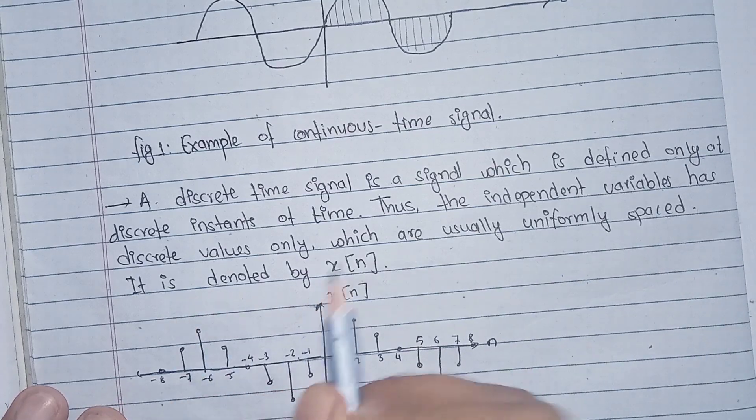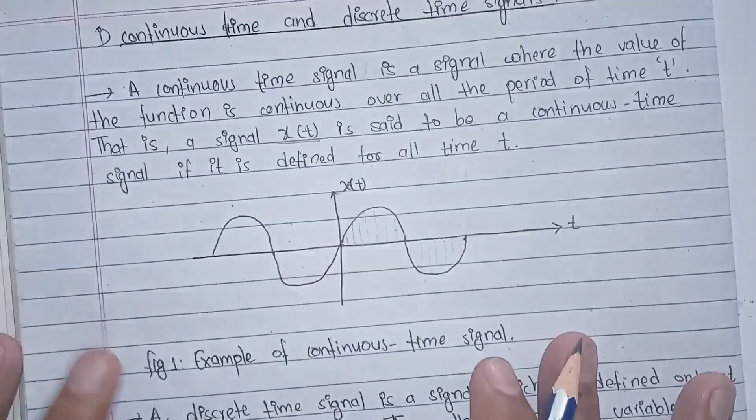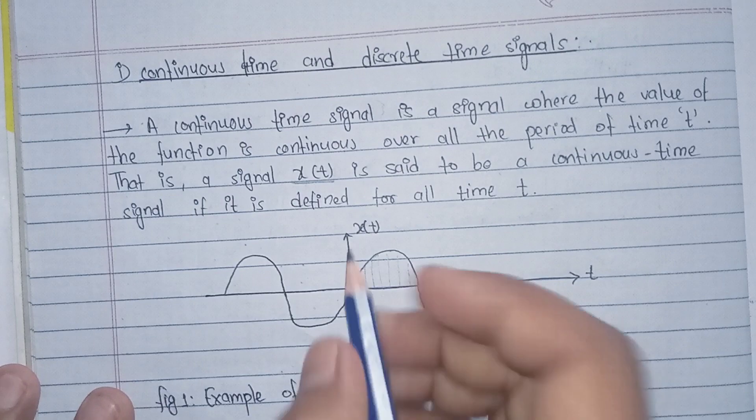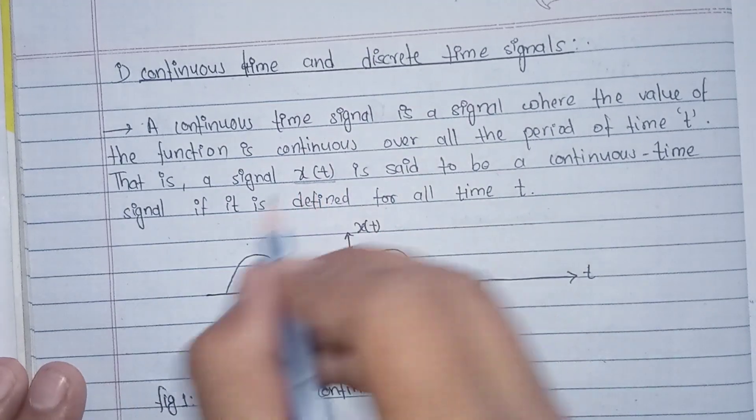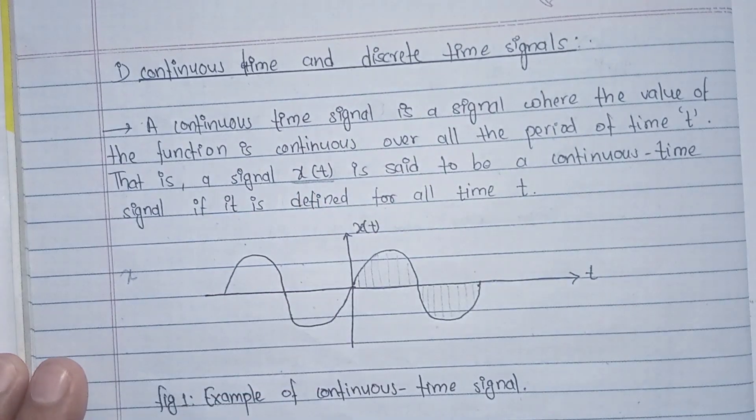The discrete time signal is denoted by x[n], while the continuous time signal is denoted by x(t).